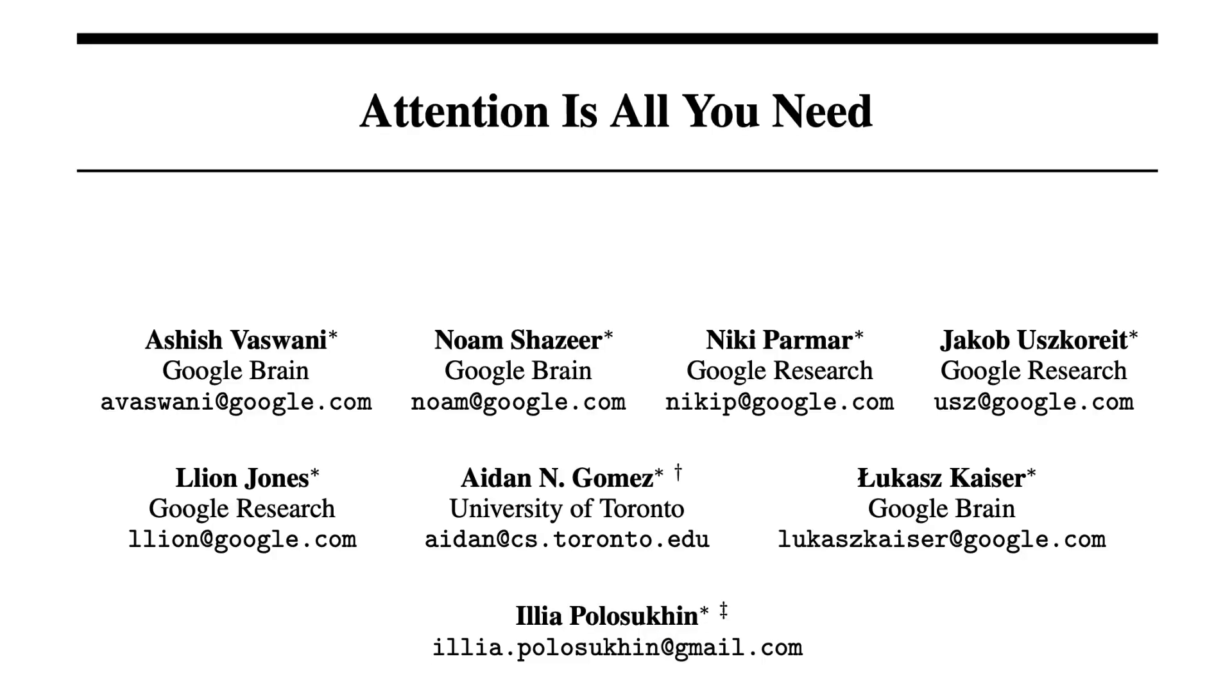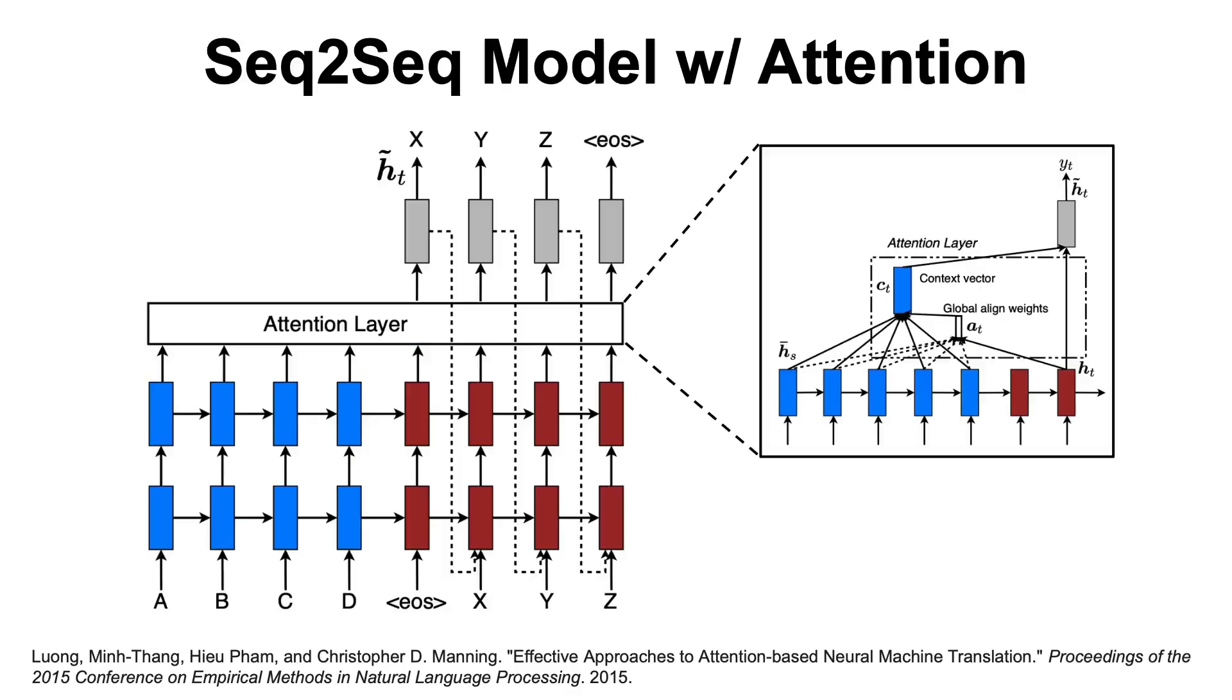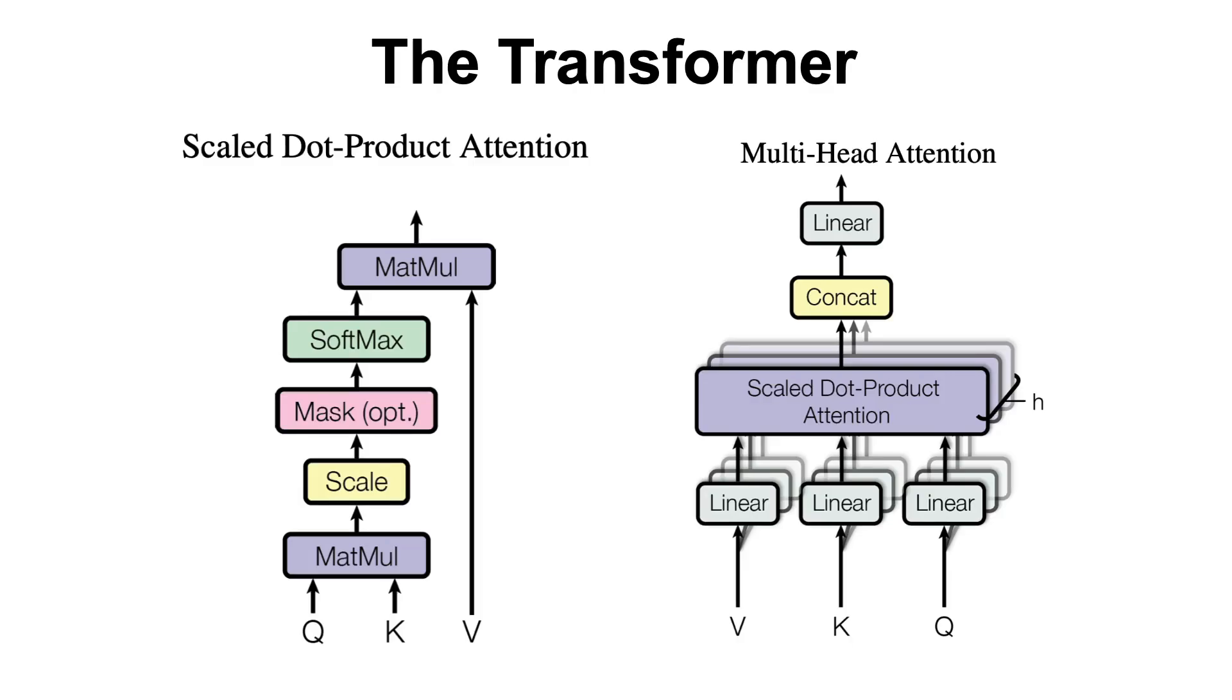I believe that the following paper requires no introduction. It's the Attention is All You Need paper, which introduces the transformer model and the self-attention mechanism. When this paper was written, the common approach for sequence-to-sequence problems like machine translation or summarization was to use a recurrent neural network to encode the input and a recurrent neural network to decode the output. Then if you wanted to improve your results, you would have also used some kind of attention mechanism between the encoder and the decoder. What this paper did was to say no, this is not how we should do it, and we should instead drop the RNN thing altogether and use only the attention mechanism, which allows us to greatly enhance the computational parallelism and the scalability of the model.